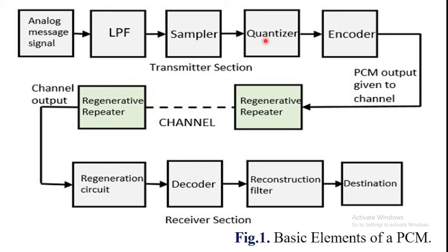The quantizer performs the process of reducing unnecessary bits and confining the data. The sampled output, when given to a quantizer, reduces the redundant (terminated) bits and compresses the value. That is the importance of the quantizer.